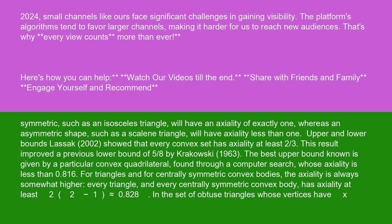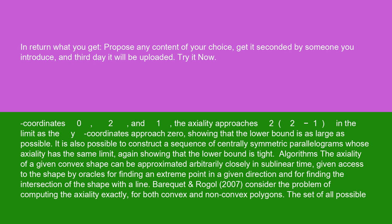In the set of obtuse triangles whose vertices have x-coordinates 0, 2, and 1, the axiality approaches 2(√2 - 1) in the limit as the y-coordinates approach zero, showing that the lower bound is as large as possible.